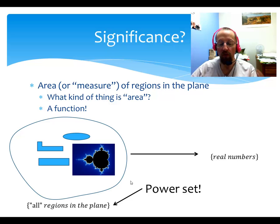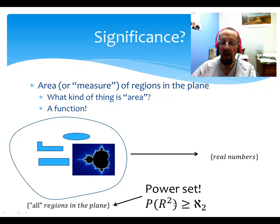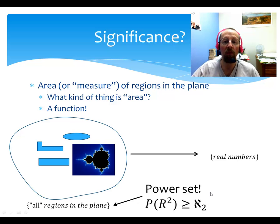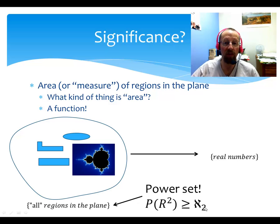We already started with the real numbers — the number line and the number plane — and that's already getting into uncountable sets. Now we're going beyond that: we've got the plane, and we're looking at the power set of the plane. That's at least going to aleph 2. Depending on the continuum hypothesis, it might not be equal to it, but it's at least a couple of steps above aleph naught. We're definitely treating this idea of grouping all this stuff together as one object — the set of all sets in the plane — a completed infinity, and a pretty decently big one, even bigger than the smallest uncountable infinity.